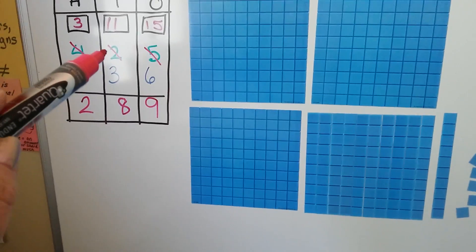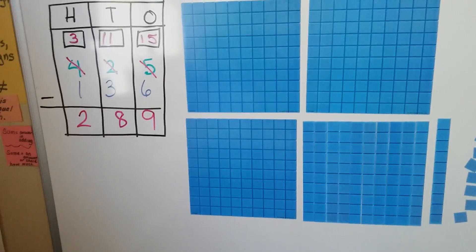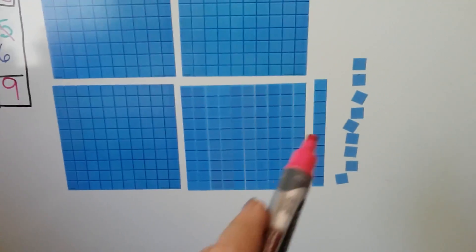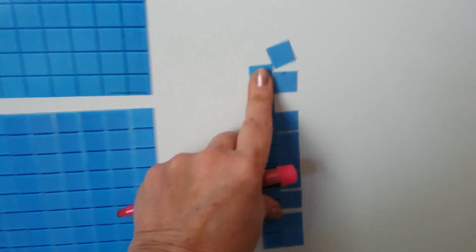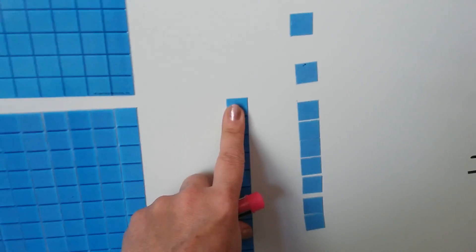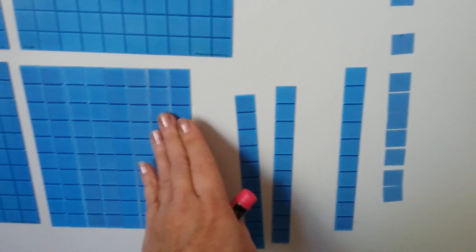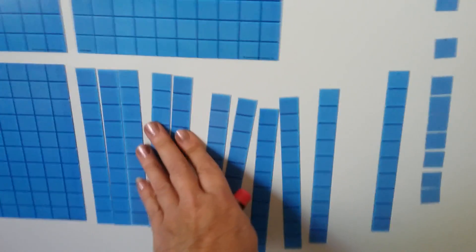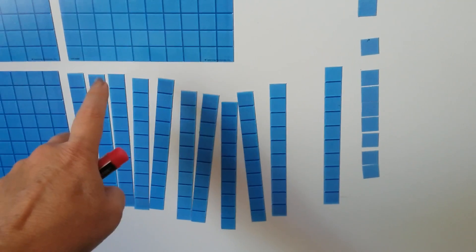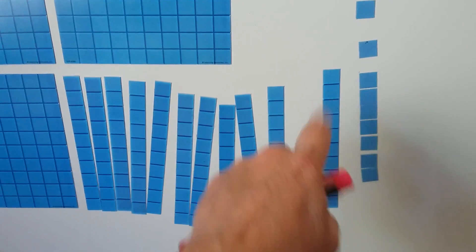Now it says we have to take away three tens, but I only see one ten here. So what we can do is move our ones over and out of the way a little bit. We only have one ten here. We can split this hundred up as ten tens and regroup it to the tens place. Now we have one, two, three, four, five, six, seven, eight, nine, ten, eleven tens.